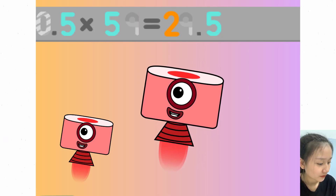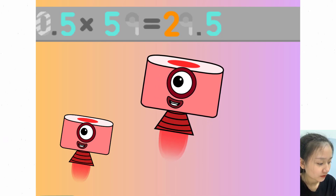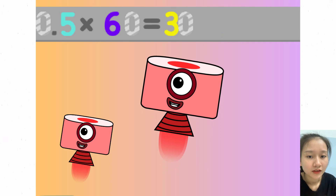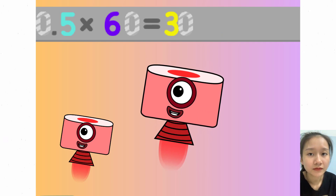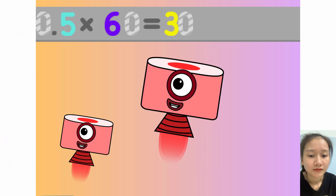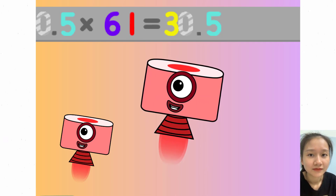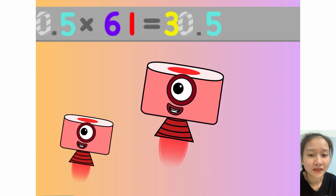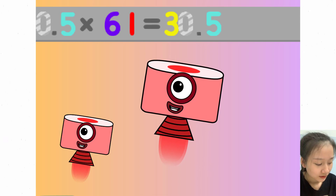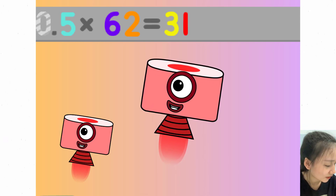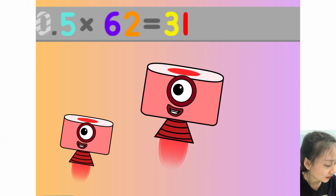0.5 times 59 equals 29.5. 0.5 times 60 equals 30. 0.5 times 61 equals 30.5. 0.5 times 62 equals 31.